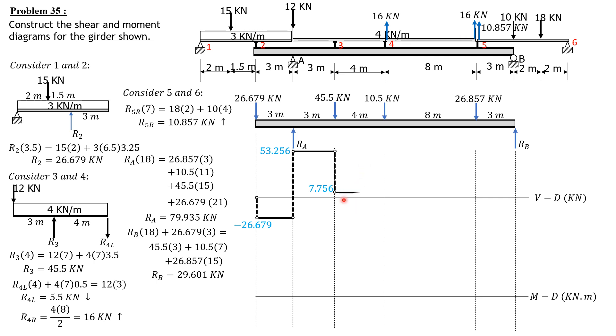Between this point and that point, there's no change in shear, so it's just constant. 7.756 minus 10.5 is negative 2.744. From here to here, there's no change in shear: negative 2.744 minus 26.857 is negative 29.601, and constant. Then plus RB, which is 29.601, so the shear diagram closes.